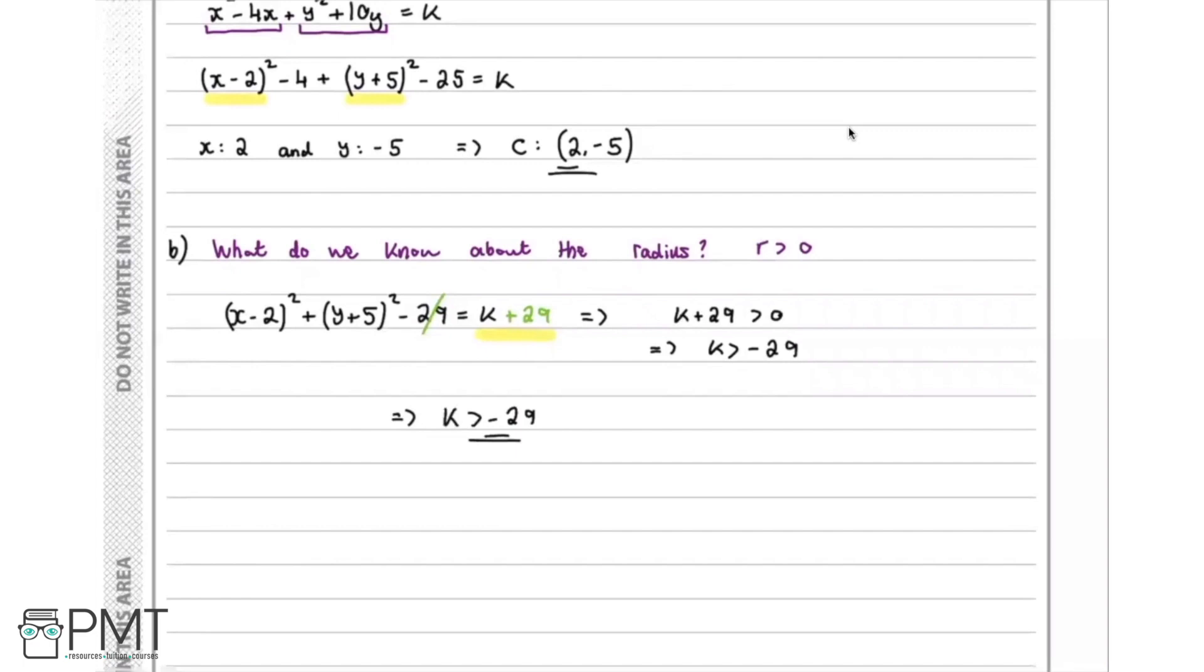So that's our solution. We look back and we see that this question is worth two marks. So we will get the first mark for deducing that the right hand side of our equation must be greater than zero. And then our second mark will be for concluding with the correct answer, k is greater than negative 29.